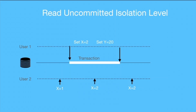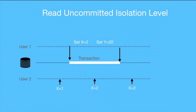This scenario brings us to the use case of the read uncommitted isolation level. Suppose the initial value of x is 1 and a user starts a transaction and sets x equal to 2, but the transaction is not yet committed. If another client tries to read x, it will be able to read the uncommitted value x = 2. This is the read uncommitted isolation level — a client can see values set by transactions that have not yet been committed.